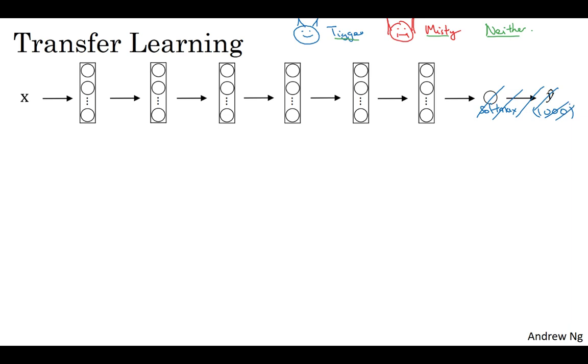Get rid of the softmax layer and create your own softmax unit that outputs Tigger, or Misty, or Neither. And in terms of the network, I'd encourage you to think of all of these layers as frozen. So you freeze the parameters in all of these layers of the network, and you would then just train the parameters associated with your softmax layer, which is a softmax layer with three possible outputs: Tigger, Misty, or Neither.